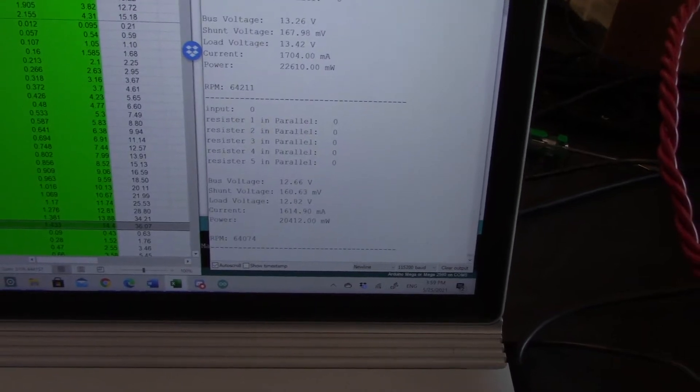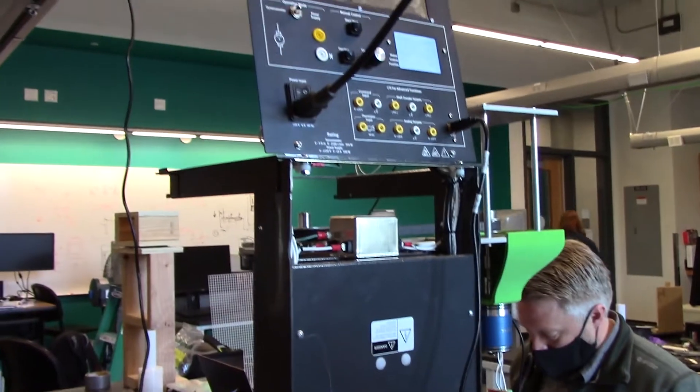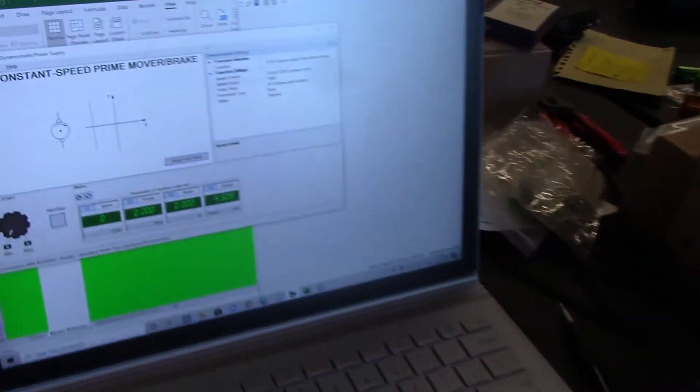The other piece of data that we use to control the system is from the Hall effect sensor, which is attached to the generator on the wind turbine. It's built into our particular generator, and what a Hall effect sensor does is it tells us the RPM, how fast it's spinning.